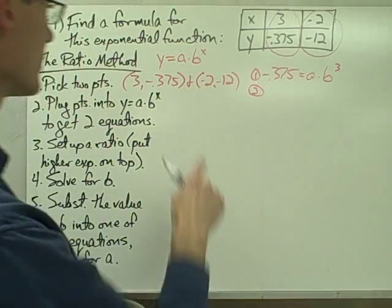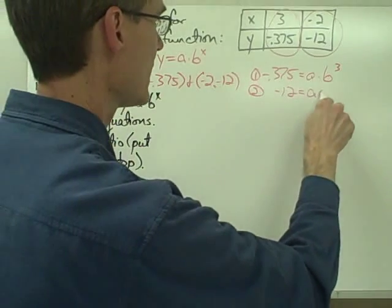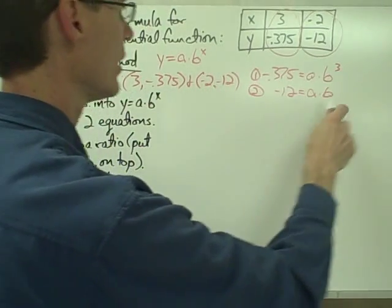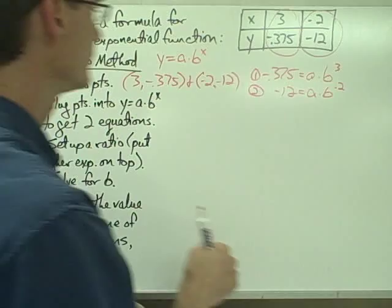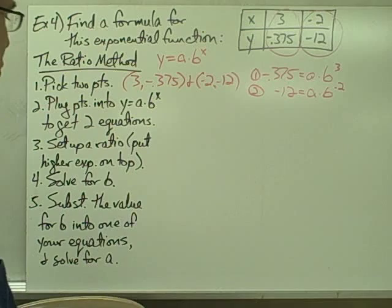My second equation: y is negative 12, equals a times b to the power of negative 2. So I plugged my two points into y equals a times b to the x, and I got my two equations.